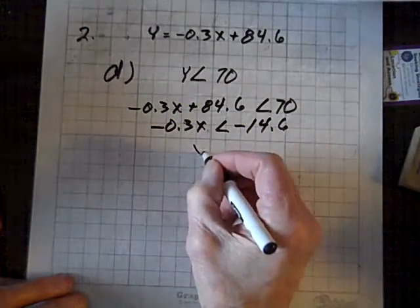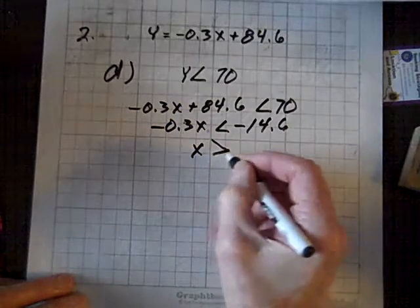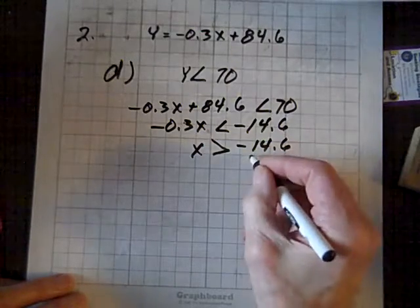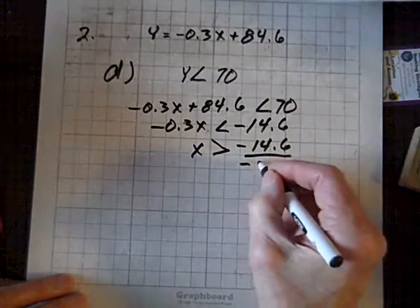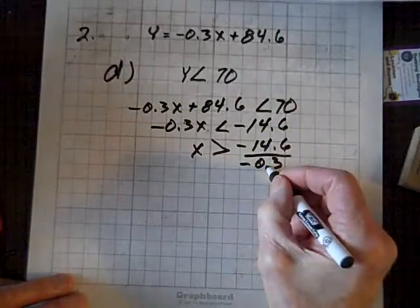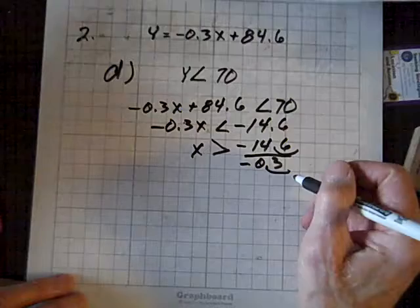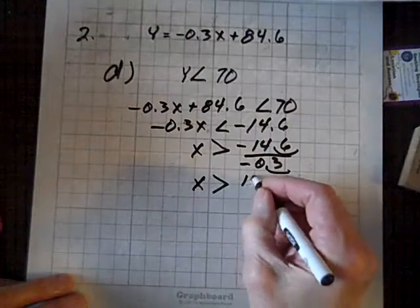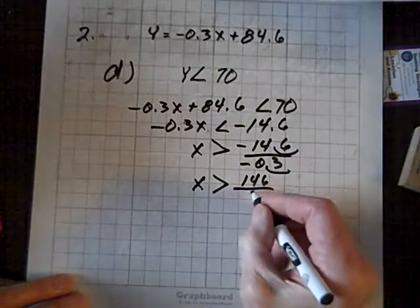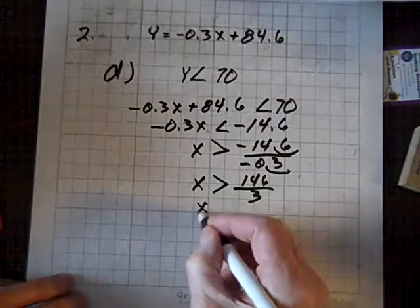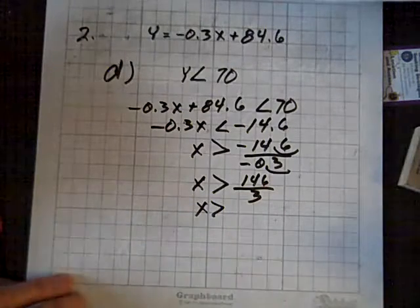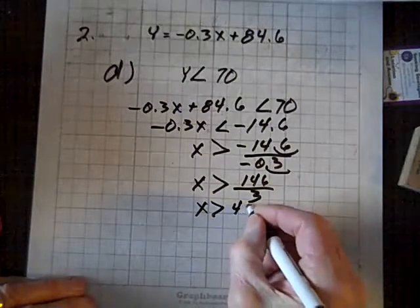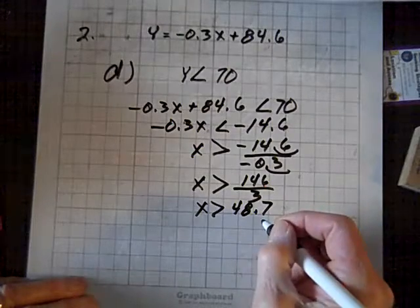And we get 70 minus 84.6 is going to be negative 14.6. Now, to isolate X, we'll divide both sides by negative 0.3, so we'll have to flip the inequality. And if I move this decimal over once, I can move this over once, and the quotient of two negatives is positive, and we've got the quotient of 146 over 3. So, X is greater than, and when I compute that, I get approximately 48.7.